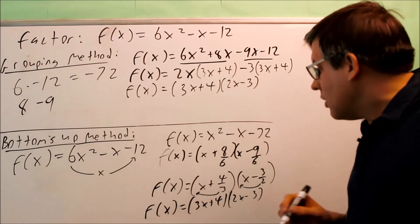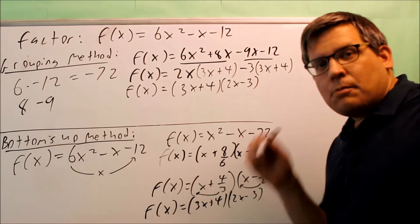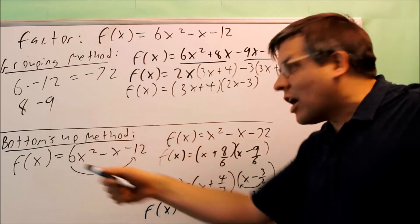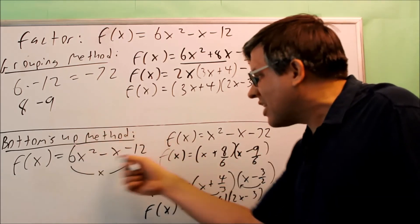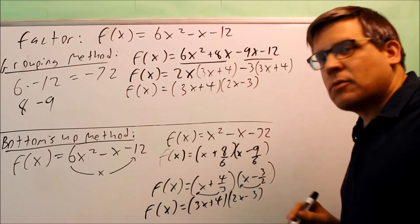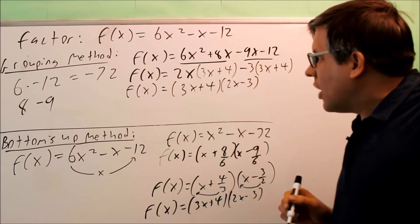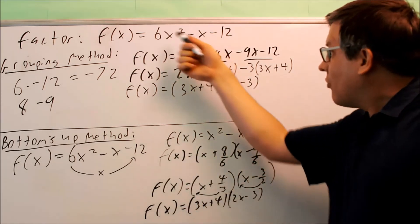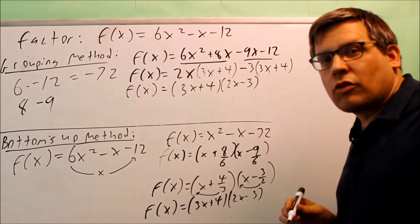So again, if you're going to use bottoms up method, make sure you always reduce these fractions here. Also, bottoms up method only works if you don't have any common factors. So if you want to use bottoms up method, you want to make sure that you remove any kind of common factors. And whatever is left, that's what you're going to do the bottoms up method to. So again, two different ways to factor that. This works if there's a number in front of the x squared that's not a 1. And if you have the common factors taken out already, then these are two different methods that are going to work for you.